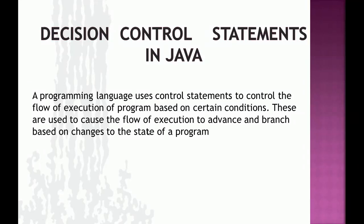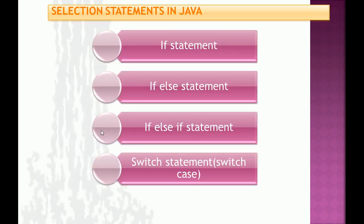Hello everyone, I am Jitendra and in this module I am going to explain decision control statements in Java. While executing programs, sometimes it becomes necessary to change the order of execution of certain statements and for given conditions we require certain logical decisions. For making decisions we use decision control statements, and in Java we have four kinds of decision statements.